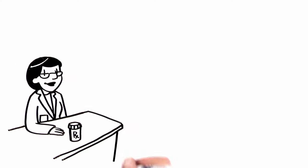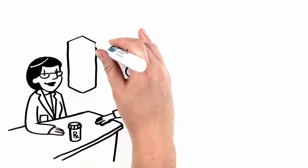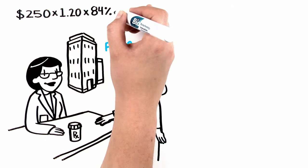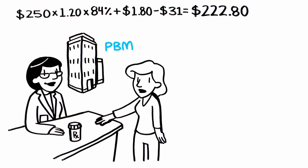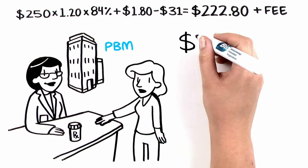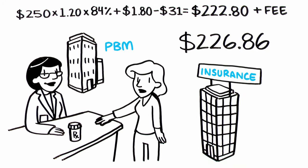At the pharmacy, you pay your portion, and the PBM reimburses the pharmacy using a complex calculation. They then charge that cost, plus a fee, back to the insurance company.